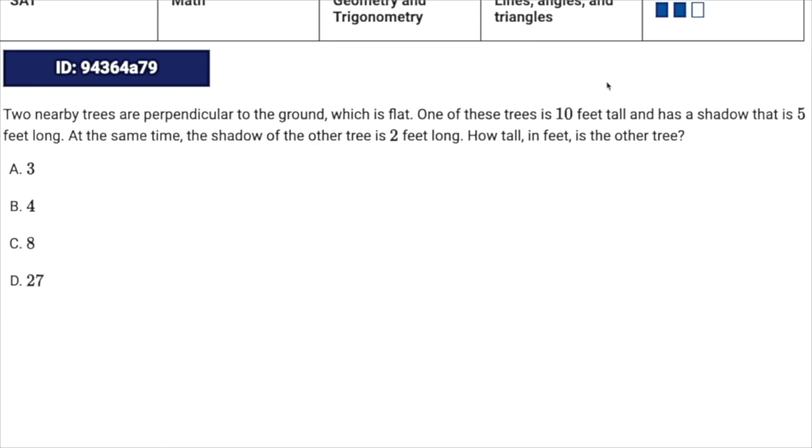This is usually going to save you time because you don't have to spend as much time visualizing in your head. And it's going to keep you from making careless mistakes. Let's look at this question. For example, it says we've got two nearby trees that are perpendicular to the ground, which is flat. One of these trees is 10 feet tall and has a shadow that's five feet long. At the same time, the shadow of the other tree is two feet long. Just from looking at this, you might be able to tell that we're dealing with similar triangles because we've got a flat ground that both of these trees share and this 90 degree angle perpendicular to the ground.